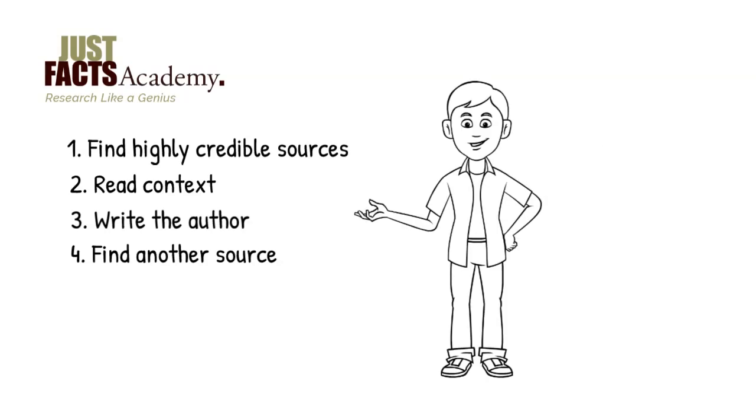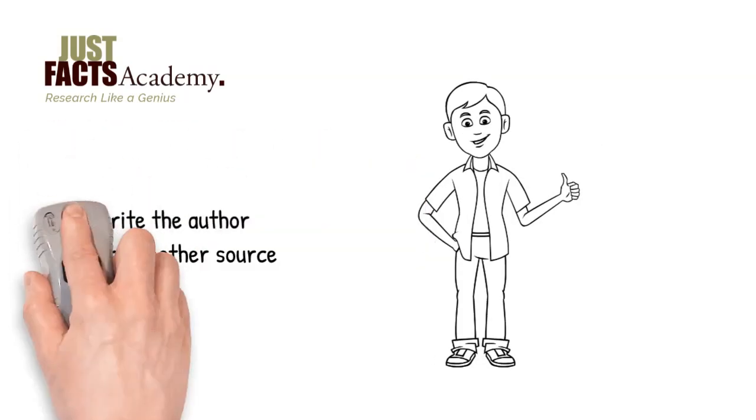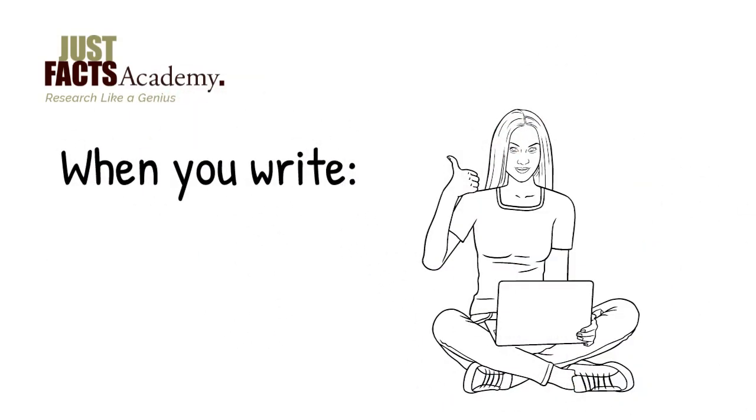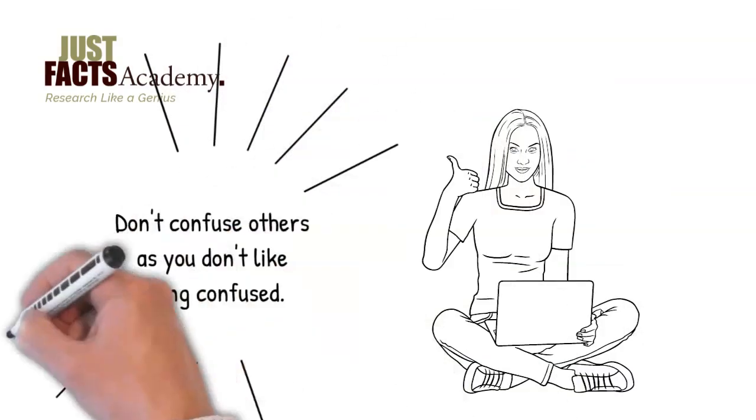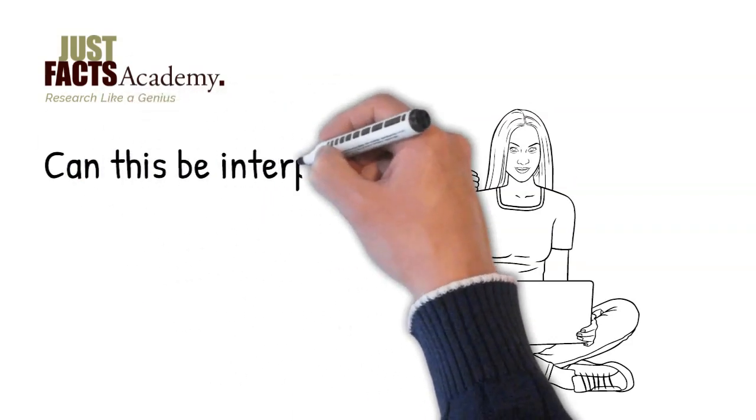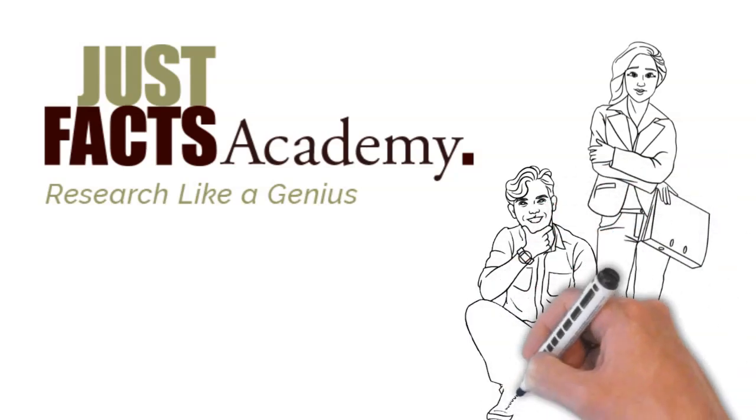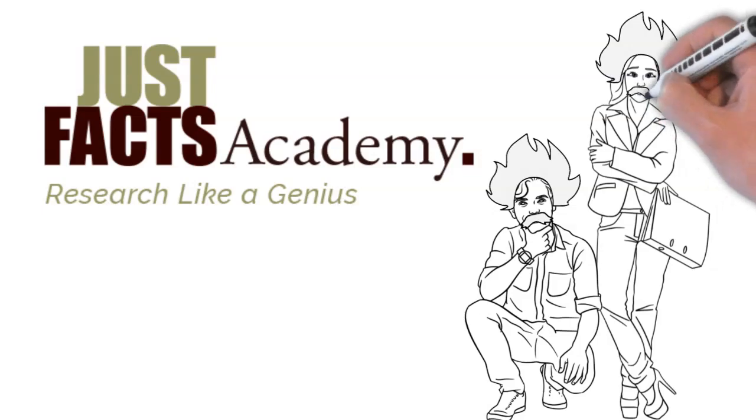None of this requires a high IQ. It just takes effort, which is something we all can give. And please, don't make the same mistake in your own writing. Remember the golden rule. Don't confuse others, as you don't like being confused. That means don't use vague language and be vigilant to ask yourself, can this be interpreted another way? So make sure you apply this clarity principle along with the rest of Just Facts' standards of credibility so you can research like a genius.